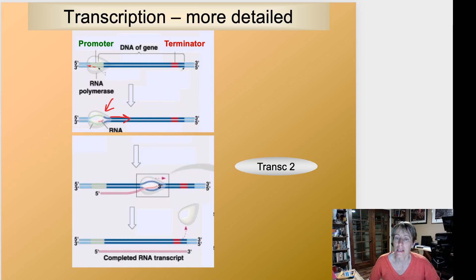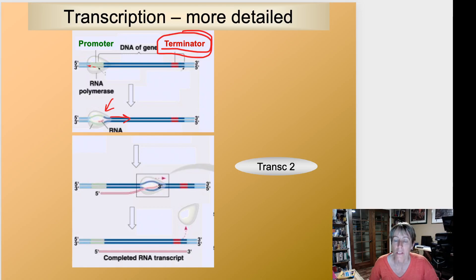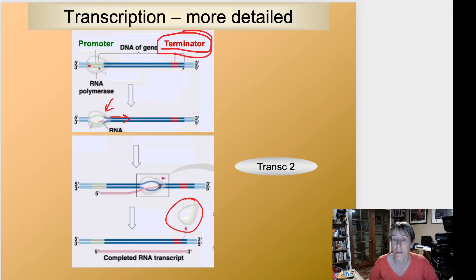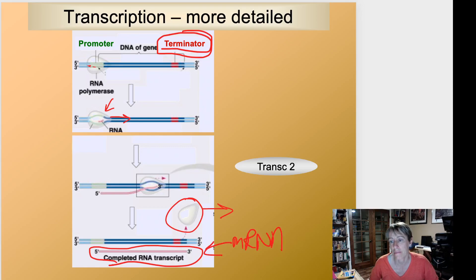Eventually the enzyme gets to a sequence on the DNA called the terminator, which is where the enzyme knows to stop copying. When it reaches the terminator sequence, the RNA polymerase falls off the template. The DNA zippers itself back up — it hasn't been changed or harmed. The enzyme can be reused, and here's our completed piece of messenger RNA, built in the five to three direction. In the next video we'll talk more about what happens to this mRNA next, but this is the general process of transcription.